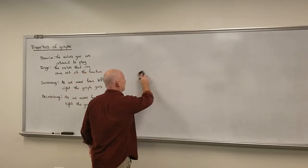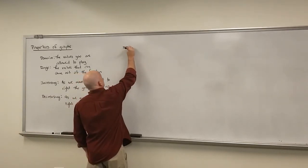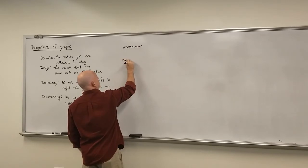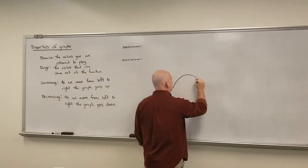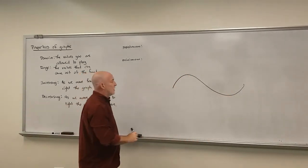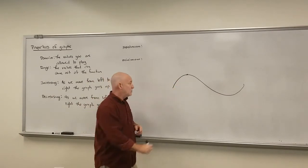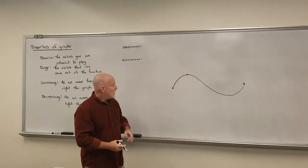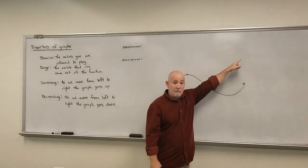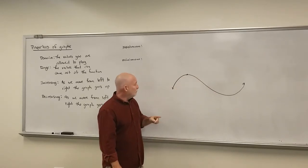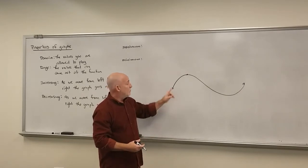A few other features of a graph are called relative extrema — maxes and minimums. If I pick the point exactly on top of a hill, we call this a maximum. More specifically, we call it a relative maximum, because maximum generally means the biggest. But since this graph goes up forever, there are places higher than this spot. This spot is higher than all the other points in a little area right around it, so we call it a relative maximum.